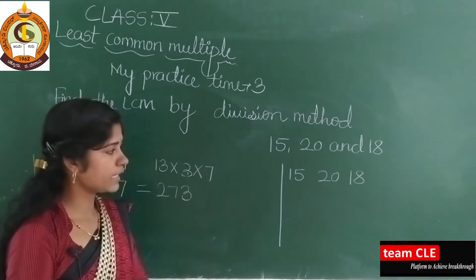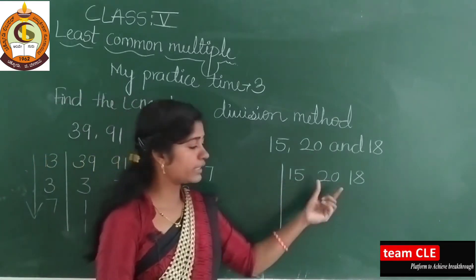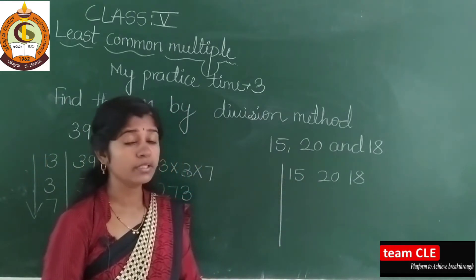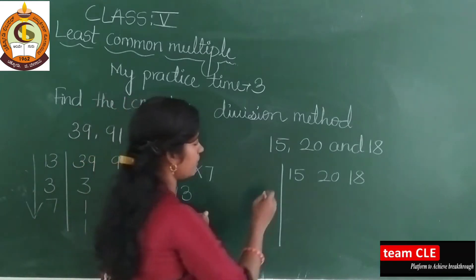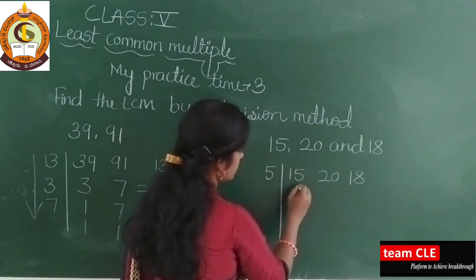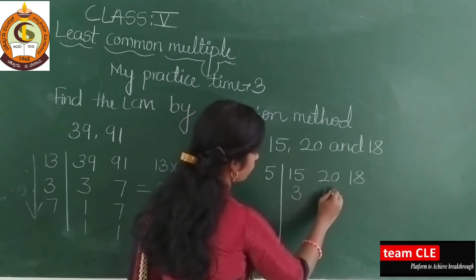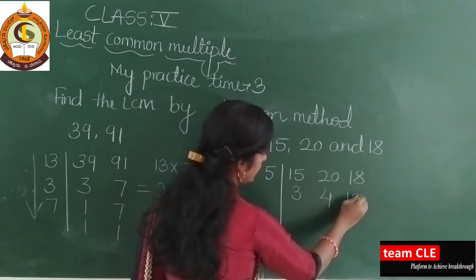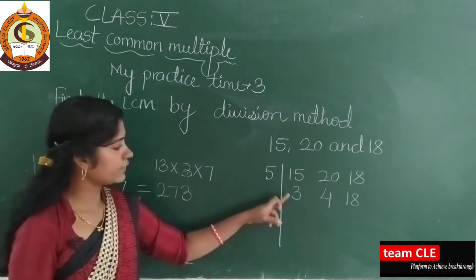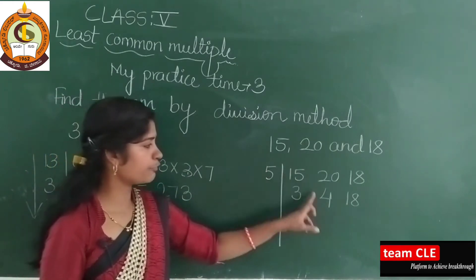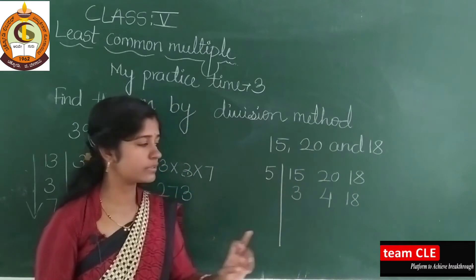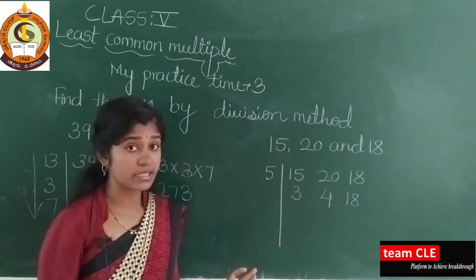All are not in the same table, but 15 and 20 are in the same table — in the 5 times table. So check: 5 threes are 15, 5 fours are 20, and 18 as it is. 5 threes are 15, 5 fours are 20 — 18 is not in the 5 times table, so you keep it as it is.